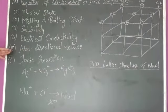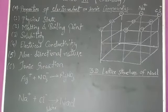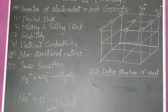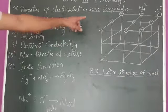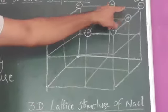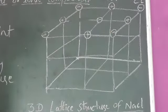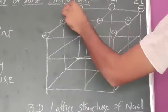Next property is non-directional nature. In ionic compounds, each ion is surrounded by several oppositely charged ions. We can see that every ionic compound has opposite charged ions. This is why positive sodium has oppositely charged ions like chlorine.